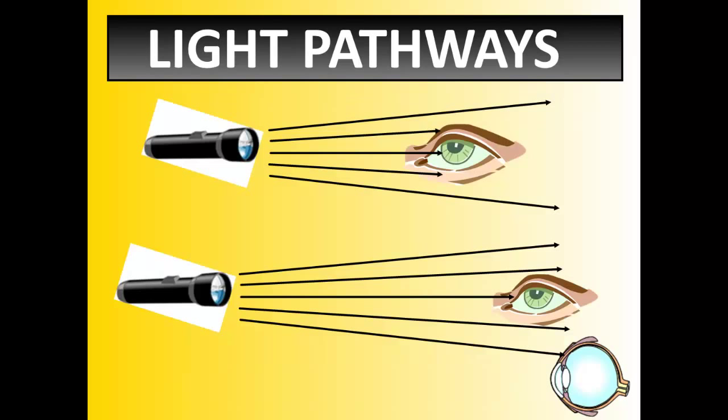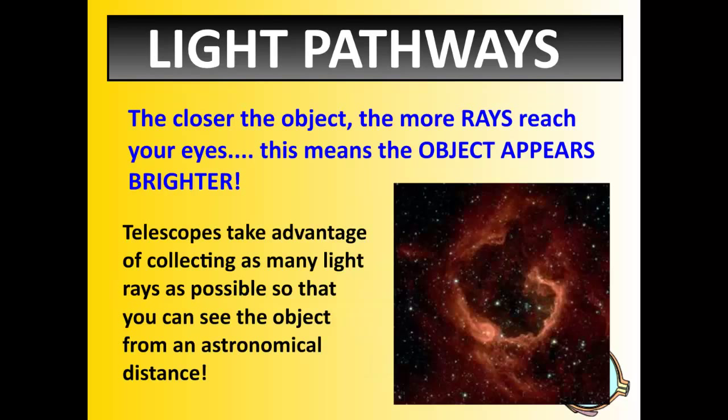Same thing with the way your eyes view shadow or light. The closer you are to a source of light, the more light rays strike your eyes and the brighter it appears. The further you are away, the less amount of light rays strike your eyes and the dimmer it may appear. Very simple concept. I'm sure it's been reviewed with you in previous years. The idea of this further away or closer to light rays allows scientists to actually take advantage of this property to see things far away. Because the closer the object, the more rays will reach your eyes, which means it appears brighter. Telescopes take this property to the extreme advantage. It collects as much light as possible so that you can see the object in outer space from astronomical distances.